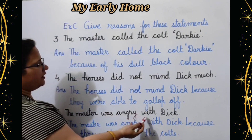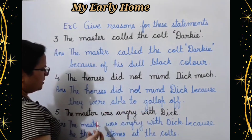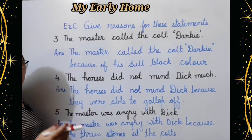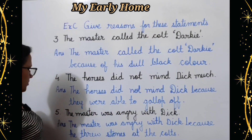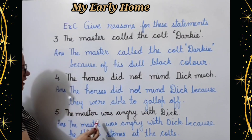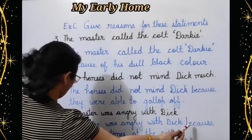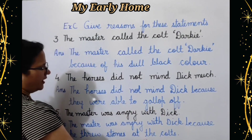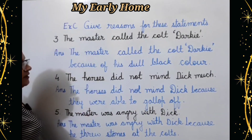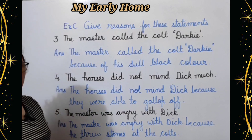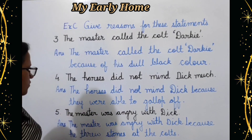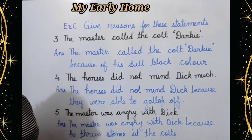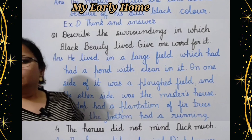Fifth statement: The master was angry with Dick. Malik Dick se naraz tha. Kyuun? Answer: The master was angry with Dick because he threw stones at the colts — kyunki woh colts par pathar phekta tha.